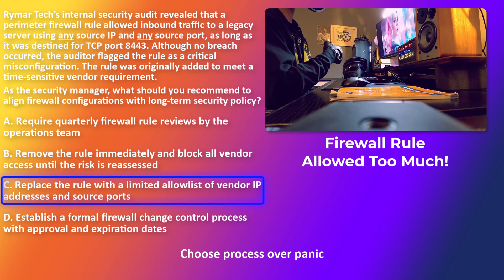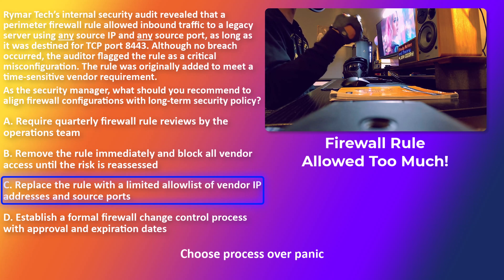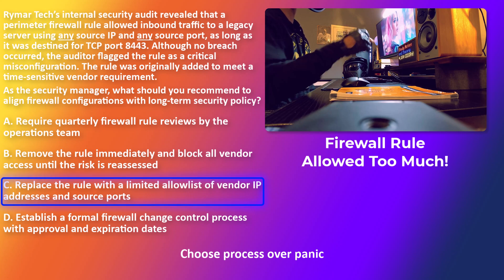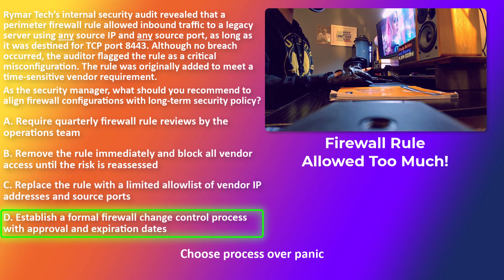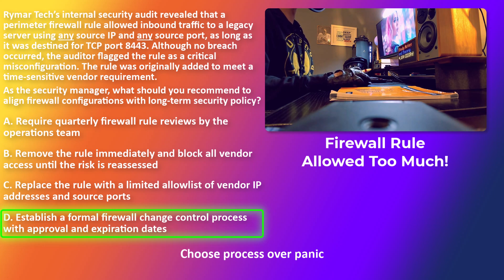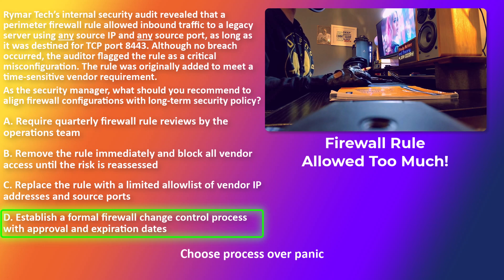And instill confidence in senior management in you, the CISSP — because you're not just guarding ports on a firewall, you're guarding the decision process that controls them. That's your job. Choice D is the correct answer: establish a formal firewall change control process with approval and expiration dates. If you work at a large company right now studying for your CISSP, you probably have that in place already.